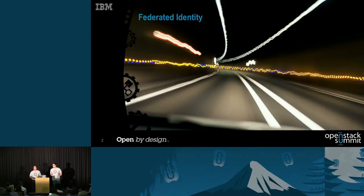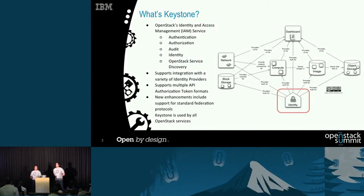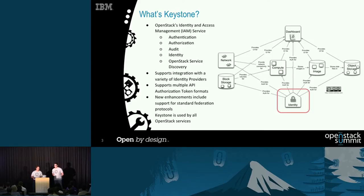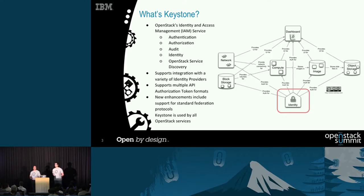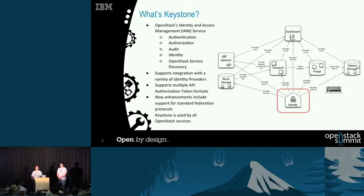Our first topic is federated identity. When we talk federated identity, the OpenStack component responsible for it is Keystone. This is OpenStack's authentication, authorization, and access management service. It also provides audit capabilities, identity management, and service discovery. It supports a lot of token formats and includes new enhancements for things such as federation, and it's used by all the OpenStack services.